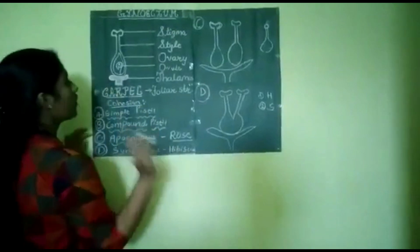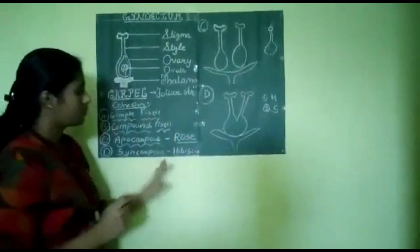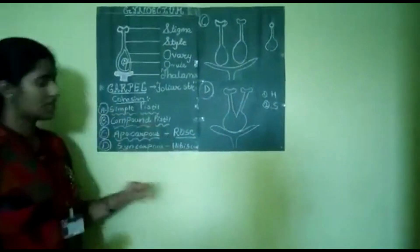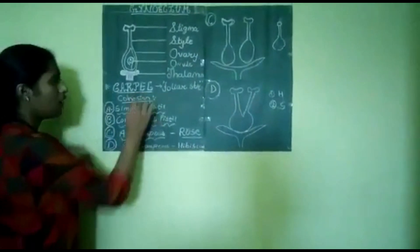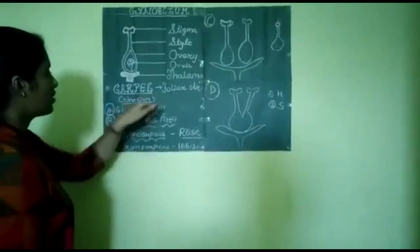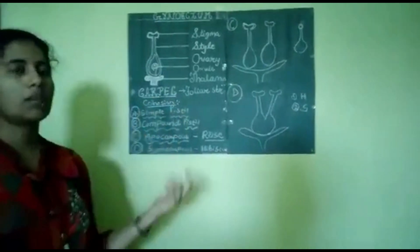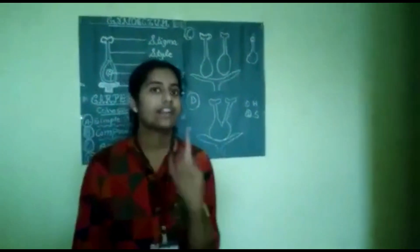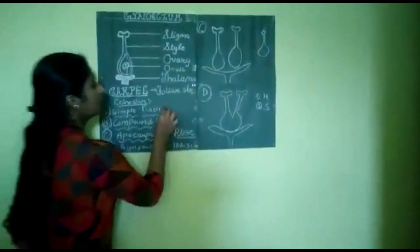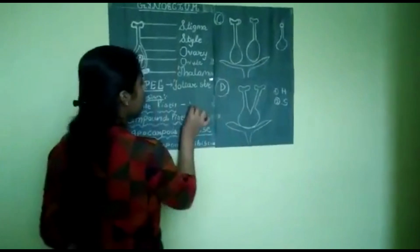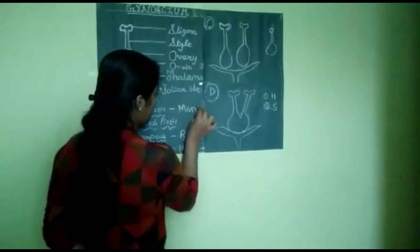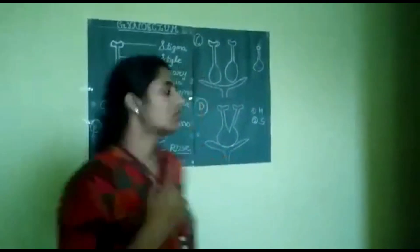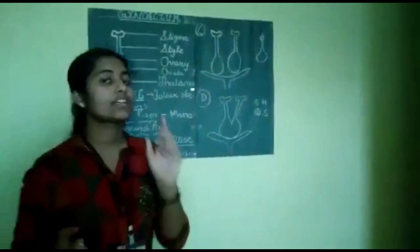The next portion that we are going to cover is the cohesion of carpel. This is a necessary topic because this has been asked for one part question. On the basis of the cohesion of pistil or the cohesion of carpel, they are divided into four. Simple pistil is such type of pistil which are having only one carpel or one pistil. They are monocarpellary in nature, having only one carpel. For example, pea. Pea is having only one carpel.